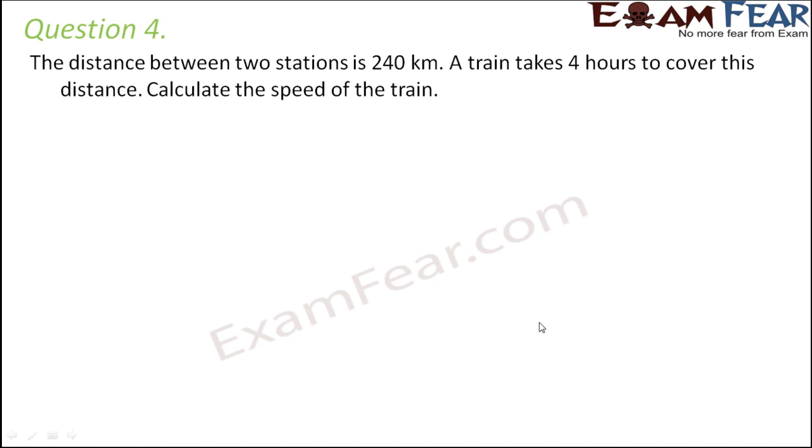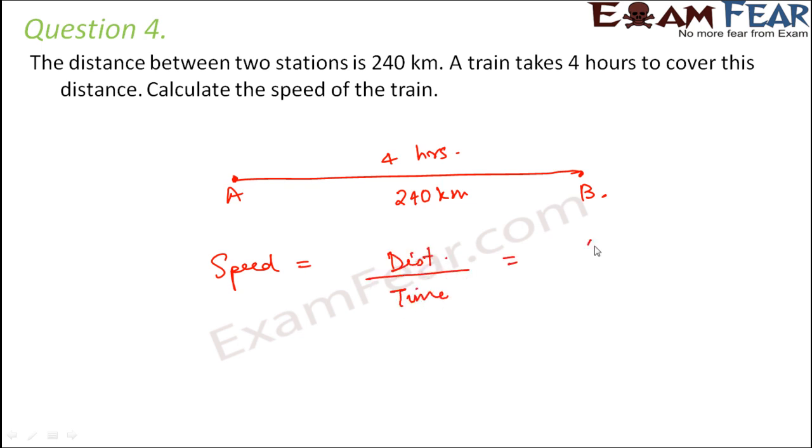Question number four. The distance between two stations is 240 kilometers. A train takes four hours to cover this distance. Calculate the speed of the train. So these are the two stations. And the distance between them is 240 kilometers. So this is point A. This is station B. And the time taken to cover this is four hours. So the speed would be equal to distance traveled divided by time taken. So distance traveled is 240 kilometers and time taken is four hours. So this is going to be 60. So the speed of the train would be 60 kilometers per hour.